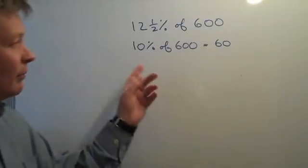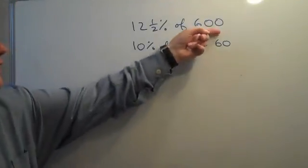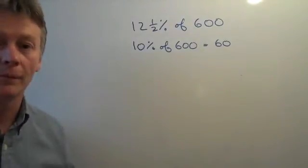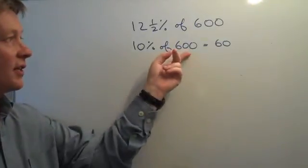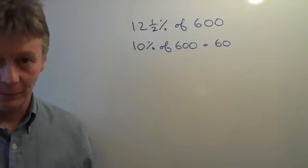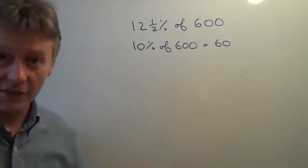What that means is that 100% of the number is 600. That's 100%, it's everything of the number. So if we want 10% of 600, then we move the decimal place along and divide by 10. So we've calculated 10% of 600 is 60.